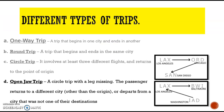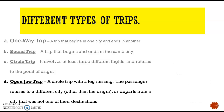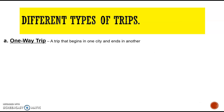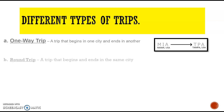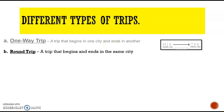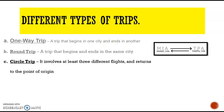So we have four types of trips: one-way, round trip, circle, and open jaw. One-way is a trip that begins in one city and ends in another — Miami to Tampa. Round trip begins and ends in the same city, while the circle trip also begins and ends in the same city; however, there are three or more cities included in the flight itinerary.